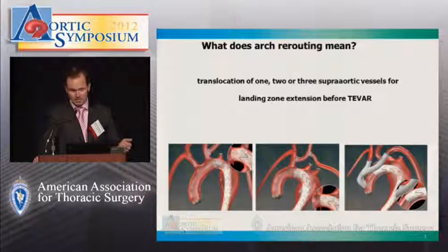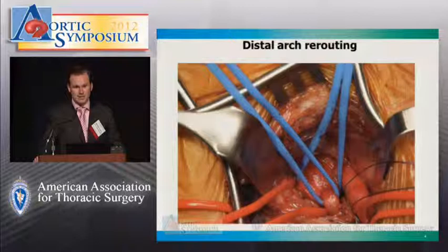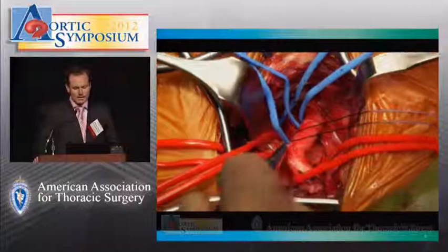What does arch rerouting actually mean? It means translocation of one subclavian, two left common carotid, or three brachiocephalic trunk vessels for landing zone extension before endovascular repair. Let's start with classical subclavian to left common carotid artery transposition, which gained a revival during these arch rerouting procedures as the original indication for occlusive disease was already a very rare one.